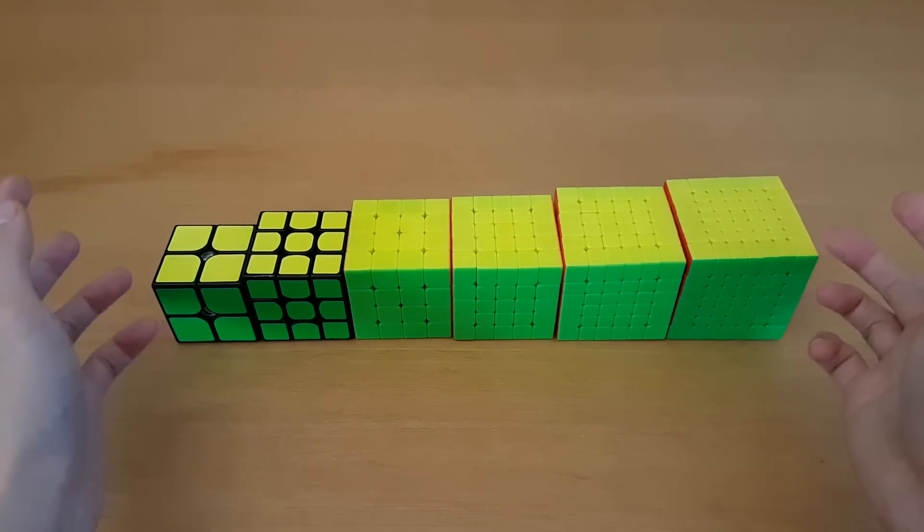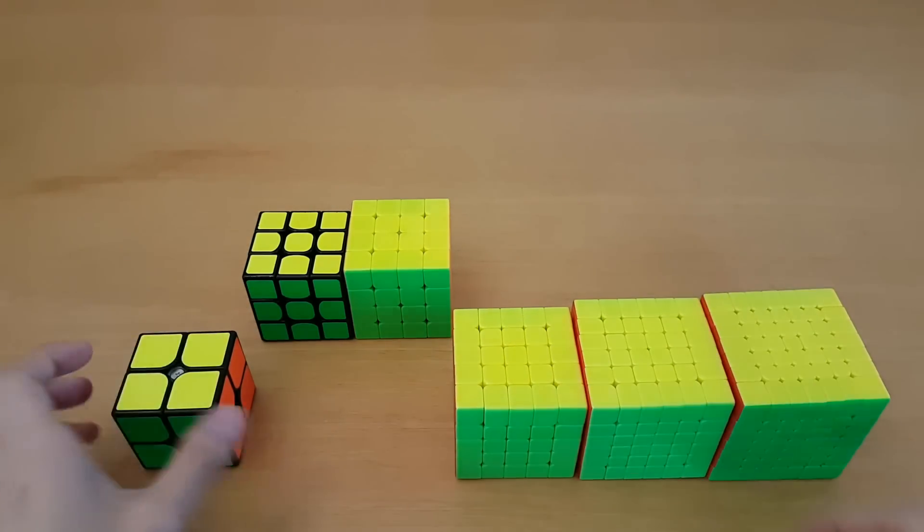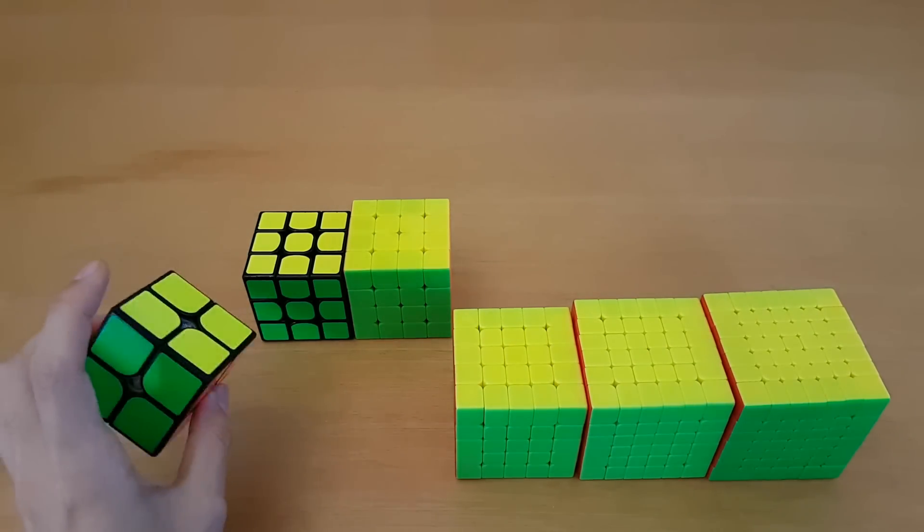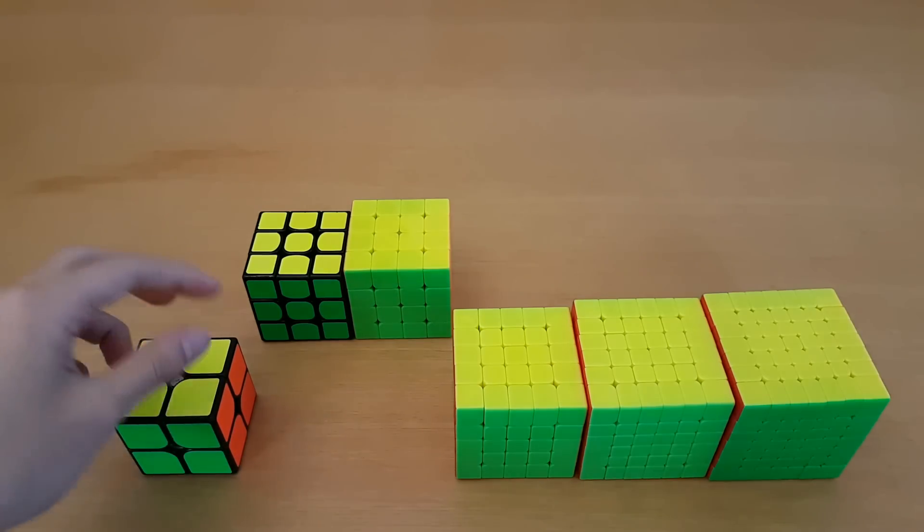And then one last thing is if you don't decide to be color neutral you still have to be somewhat color neutral on these cubes. For 2x2 you have to make the layer or side on any color which should be easy because you get inspection time and then for the last layer you're pretty much only looking at one color so it should be pretty easy.